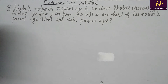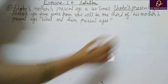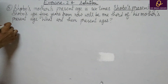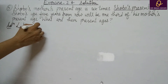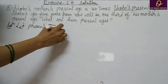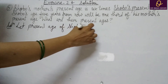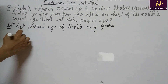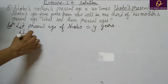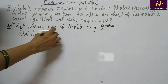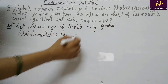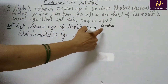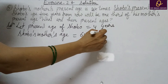Then mother की age क्या होगी? Six times Shobu's age, यानि 6y years. Then Shobu's age five years from now: 'will be' means future, यानि आगे बताना है, 5 साल के बाद क्या होगी. तो present age में add करेंगे five.